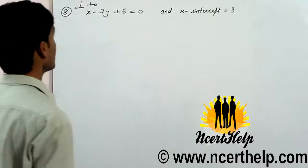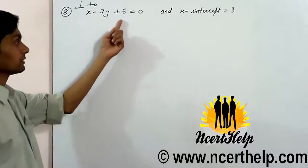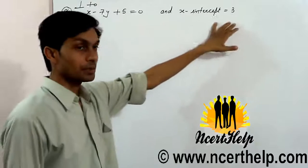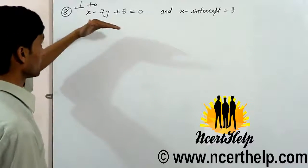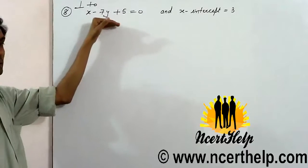Find the equation of a line which is perpendicular to this line and has x-intercept 3. So this line is perpendicular, so we need to find its slope.